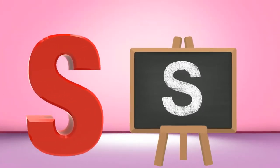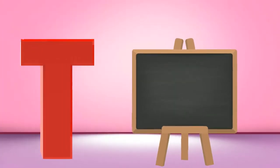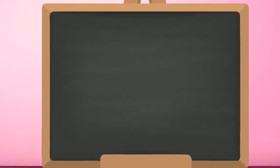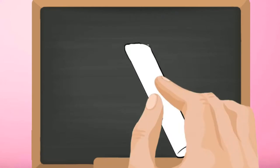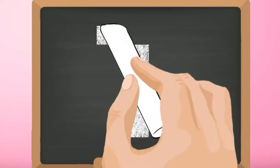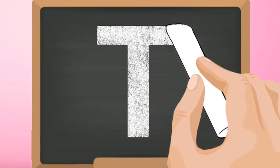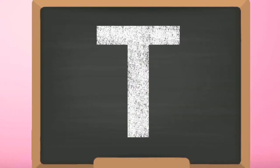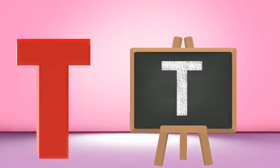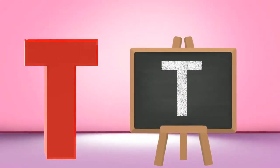T, capital T. Start from the top and draw a standing line down. Go back to the top and draw a slanting line across. Capital T.